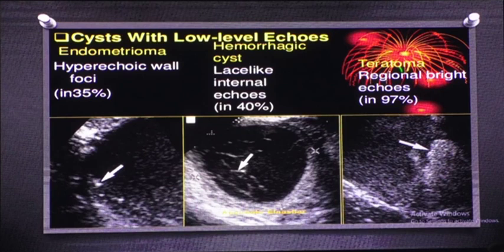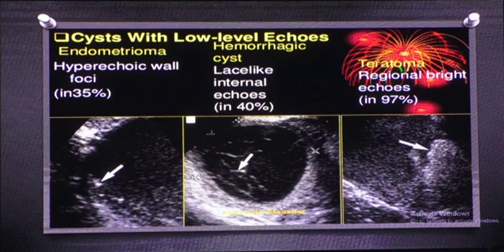The Rokitansky nodule (dermoid plug) is a solid portion projecting from the wall of a mature cystic teratoma. Unlike the tip-of-iceberg sign, the Rokitansky nodule may show blood flow on color Doppler and has malignant potential — it is important to differentiate between a simple dermoid, the tip of iceberg, and a Rokitansky nodule. If a Rokitansky nodule is identified, further investigation with CT or MRI is needed for surgical planning. Comparison summary: endometrioma shows low-level echoes with persistent echogenic wall foci pathognomonic on clinical background; hemorrhagic cysts show fibrin strands and ground glass; mature cystic teratoma shows the tip of iceberg.